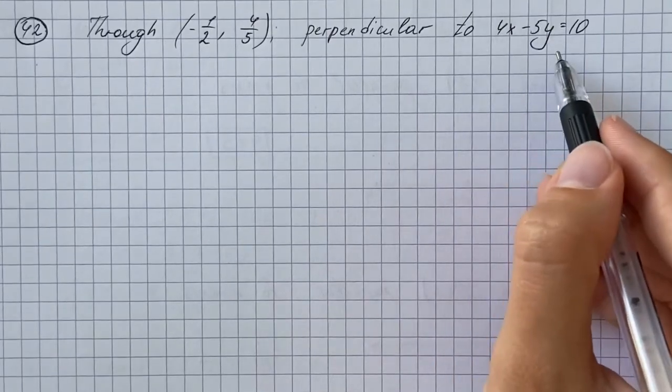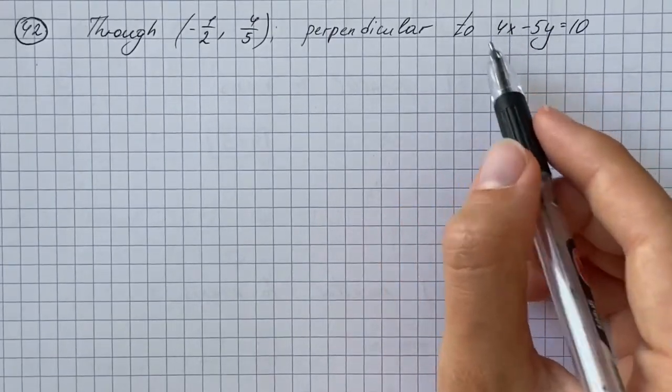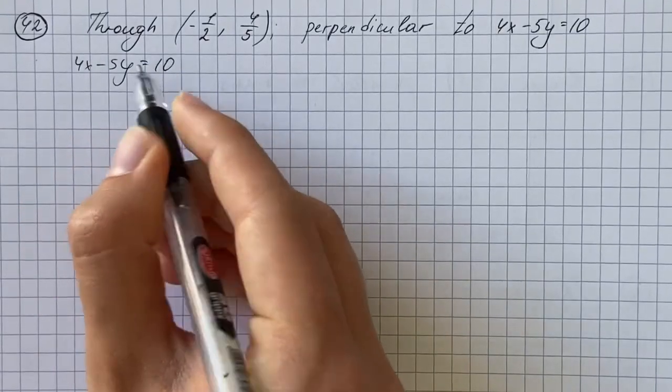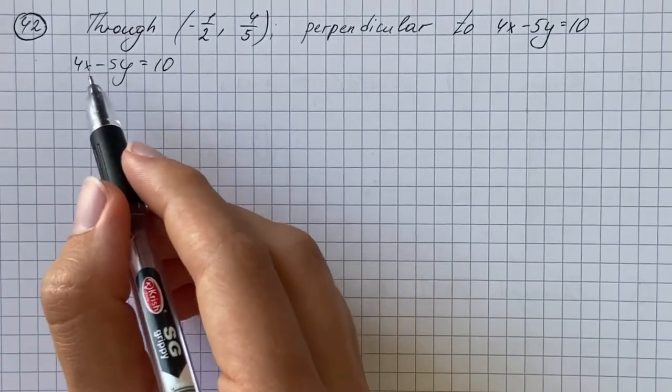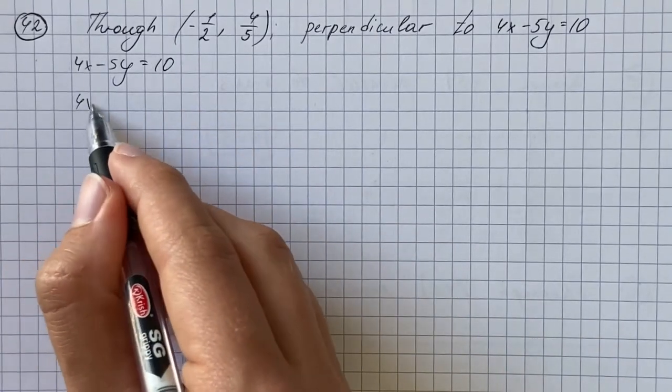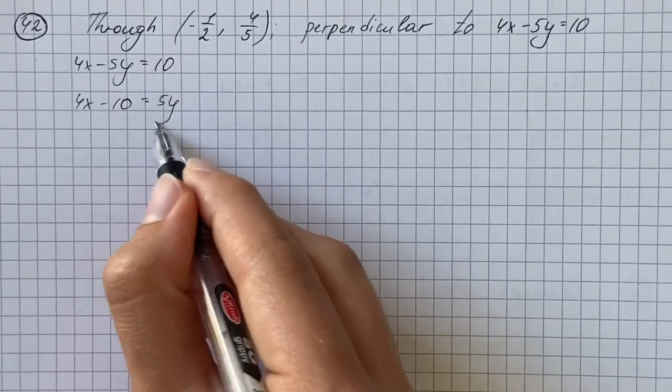So at first we're going to find the slope of this line which is 4x minus 5y equals 10. At first we're going to add 5y to both sides and subtract 10 from both sides and get 4x minus 10 equals 5y.